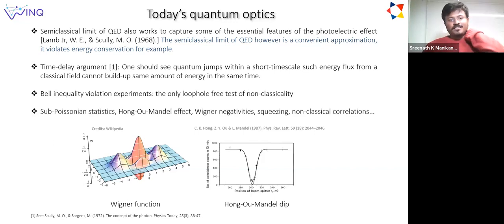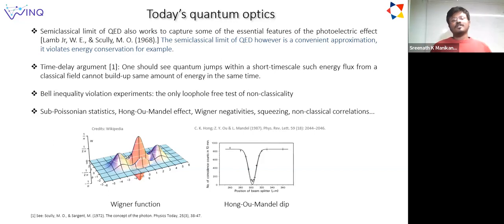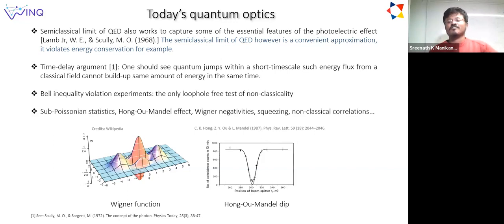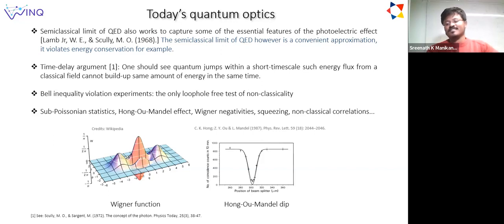It has been shown that one can in fact measure within this timescale, and it also follows from the analysis that quantum mechanically there is a certain probability to measure an excited state when you have an interaction. Of course there is more in quantum optics and quantum information now: Bell inequality violations—the only loophole-free test of non-classicality—subpoisonian statistics, Hong-Ou-Mandel effects, Wigner negativities, squeezing, non-classical correlations, and so on. QED or quantum optics has developed quite a bit in the last century beyond what was originally conceptualized by Planck and Einstein.